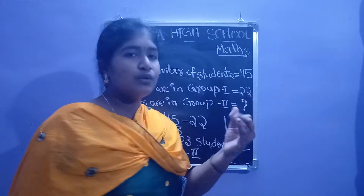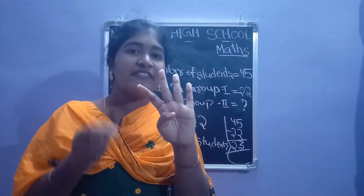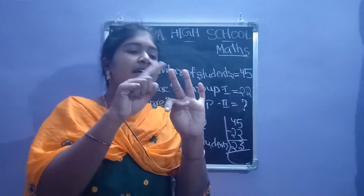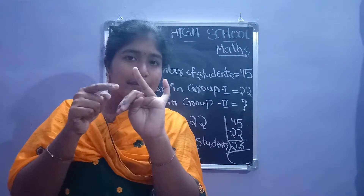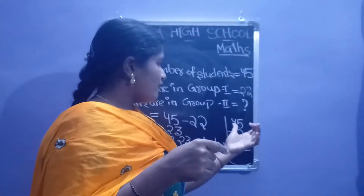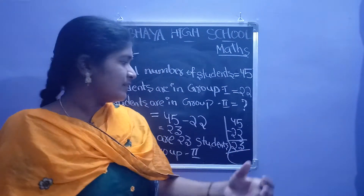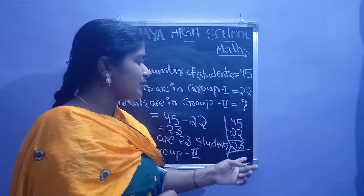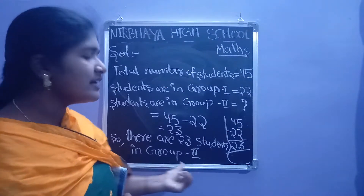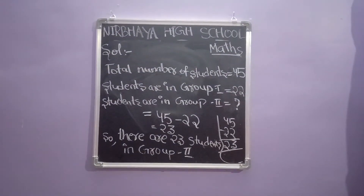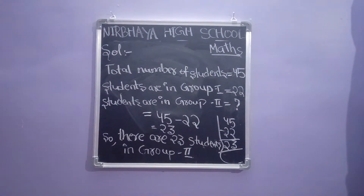4 minus 2: take 4 fingers, remove 2 fingers — 1, 2. After removing, how many fingers are remaining? 1, 2 — 2 fingers remaining. So 4 minus 2 equals 2. Therefore 45 minus 22 equals 23. There are 23 students in group 2. How many students are in group 2? 45 minus 22 equals 23, so there are 23 students in group 2.